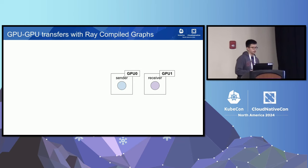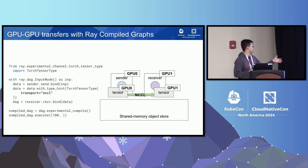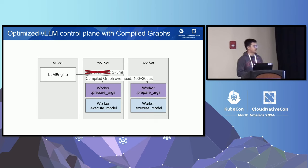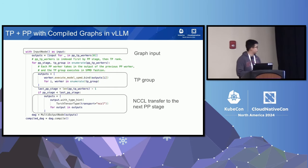With Ray Compile Graph, peer-to-peer protocols like NCCL are supported, so you can use NCCL to send tensors directly from GPU 0 to GPU 1. The API is simple — just specify transfer='nccl'. Ray Compile Graph also builds an execution schedule for users, so you don't need to worry about deadlocks caused by NCCL. For VLLM specifically, which supports both a multiprocessing backend and a Ray backend, utilizing the Ray backend with Ray Compile Graph reduces overhead from 2–3 milliseconds down to 100–200 microseconds. Tensor parallelism and pipeline parallelism were also implemented in VLLM and merged upstream. Benchmarks show Ray Compile Graph outperforms even the multiprocessing implementation in VLLM.